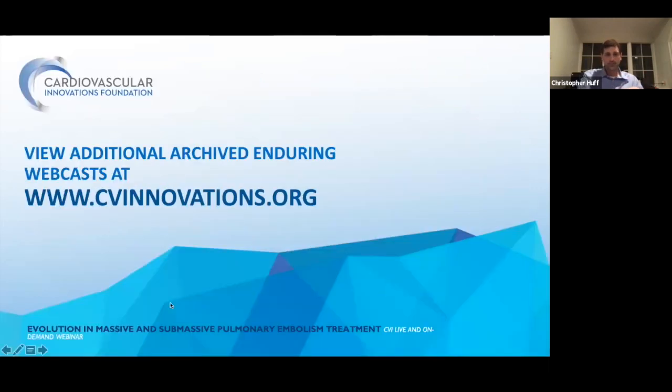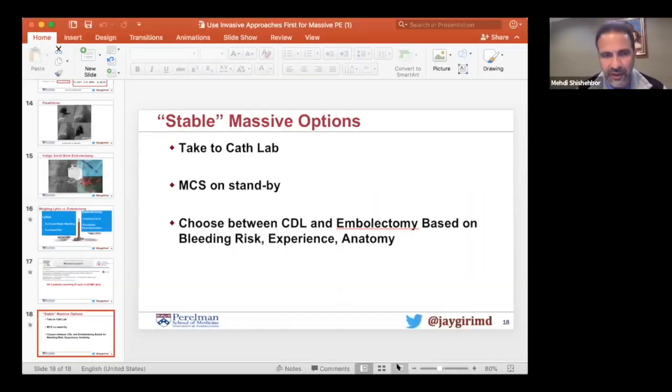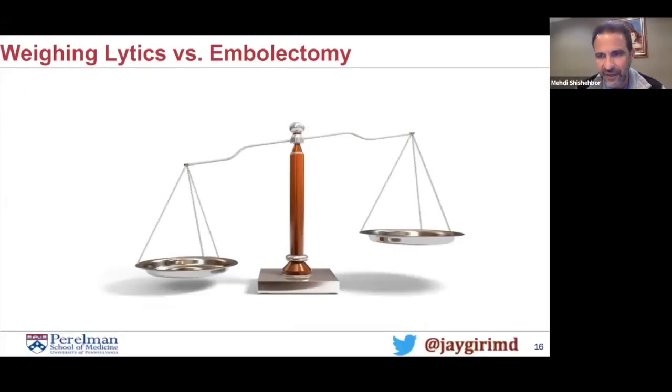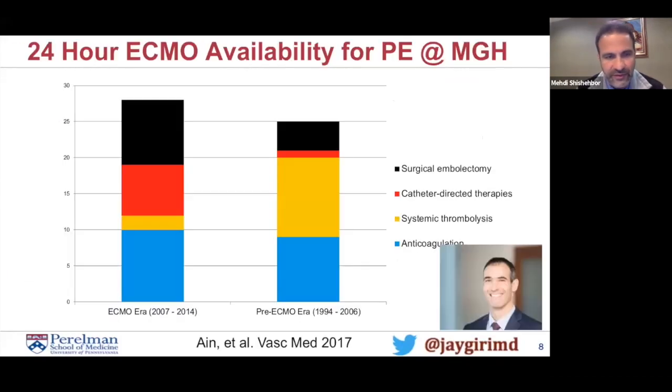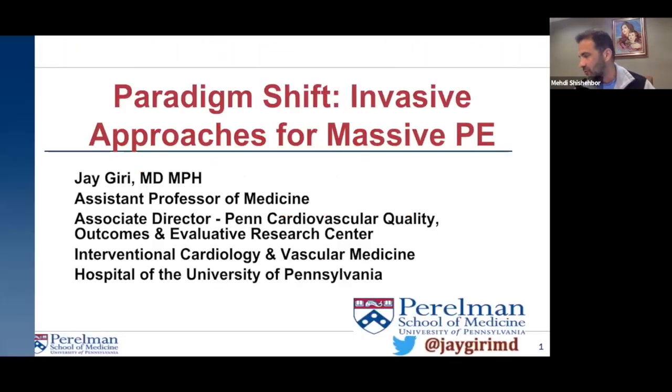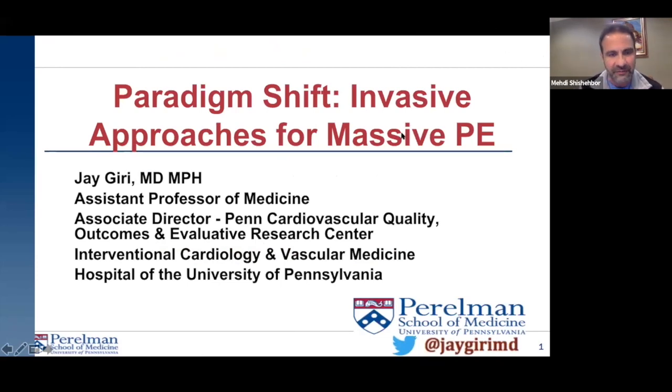Awesome, great work Chris. That was fantastic — very technical and step by step. For the sake of time, let's move on to Dr. Guri. We're going to talk about a paradigm shift in the treatment of massive PE — not submassive, but massive PE. When we're talking about massive PE, we mean pulmonary embolism associated with hemodynamic compromise: systolic blood pressure less than 90 mmHg, those requiring pressors, or in the worst cases — catastrophic PE — patients sustaining cardiac arrest. There's also a subset with overwhelming hypoxia not responsive to oxygenation.